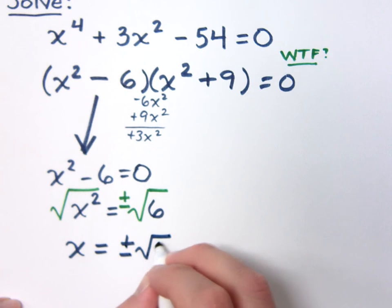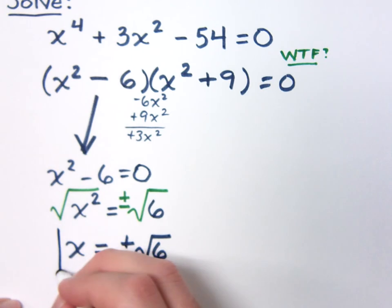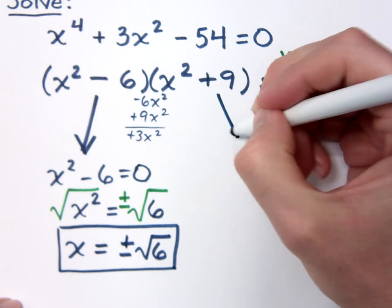Right. Plus or minus the square root of six, because does six break down anymore? No. No, that's it. So, how many solutions do I have so far? Two. I have two. How many more do I need? Let's see if I can find them.